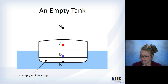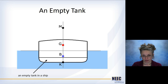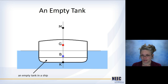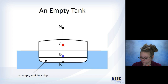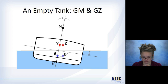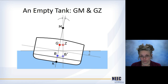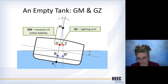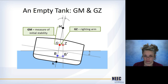Here's an illustration. We go back to the original ship and put an empty tank in the bottom. It has four main points: K is the intersection of the keel and the centerline, B is the center of buoyancy, G is the center of gravity, and M is the metacenter — that imaginary point that the ship rotates around. We take this ship and heel it over a little bit: the center of buoyancy shifts, the center of gravity doesn't. We draw a line between the new center of buoyancy and M to get GZ, the righting arm, and GM, our measure of initial stability.